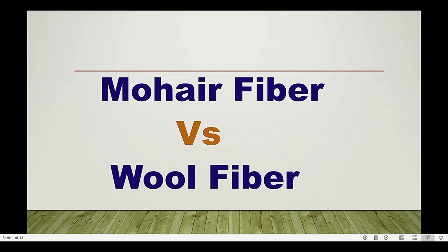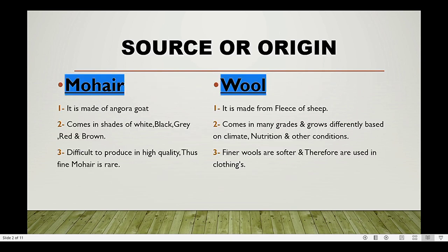Their source of origin is basically the hair of animals. Mohair is made from the Angora goat, while wool is made from the fleece of sheep — this is the main origin difference. Mohair comes in shades of white, black, gray, red, and brown, while wool comes in many grades and grows differently based on climate, nutrition, and other conditions.